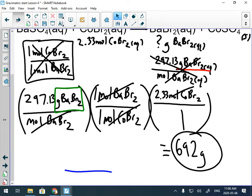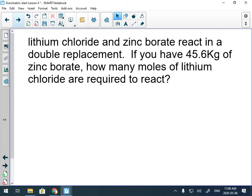Okay. One more example in this lesson. Lithium chloride and zinc borate react in a double replacement. Yeah, that's nice. It's a double replacement. If you have 45.6 kilograms of zinc borate, how many moles of lithium chloride are required? Blah, blah, blah. Oh, my God. Okay. Well, let's just start writing this out and see what happens. Lithium chloride. It doesn't say the state, so who cares?